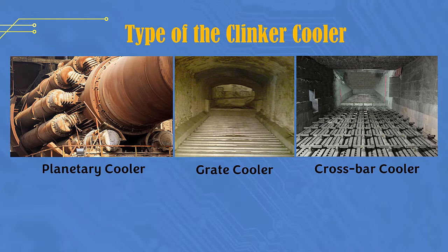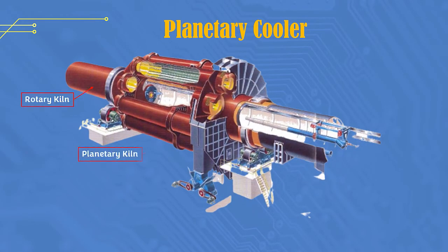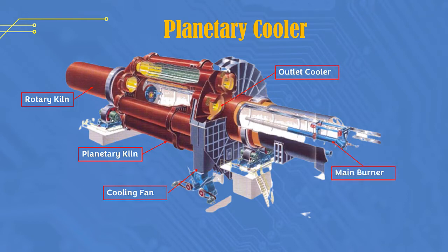The planetary cooler is a clinker cooling equipment consisting of several tubes that are attached around the shell outlet of the kiln, and inside it is installed a lifter whose function is to lift the clinker inside the cooler tube during rotation. The planetary cooler rotates following the rotation of the kiln. The clinker material from the kiln enters at a temperature of around 1000 degrees Celsius through the elbow, and exits the cooler at around 200 degrees Celsius.